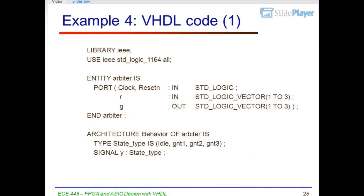Example 4 VHDL code, part 1: library IEEE; use IEEE.STD_LOGIC_1164.ALL. Entity arbiter is port: clock, reset, in STD_LOGIC; R: in STD_LOGIC_VECTOR(1 to 3); G: out STD_LOGIC_VECTOR(1 to 3); end arbiter. Architecture behavior of arbiter is. Type state_type is (idle, GNT1, GNT2, GNT3). Signal Y: state_type.